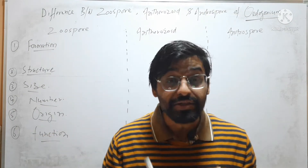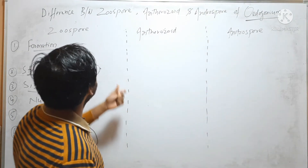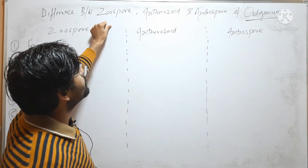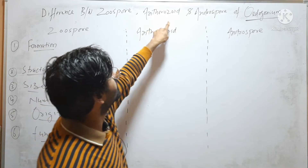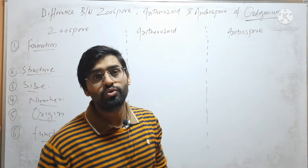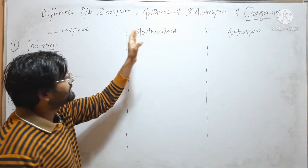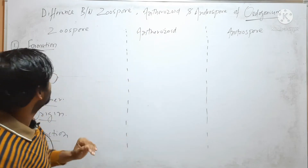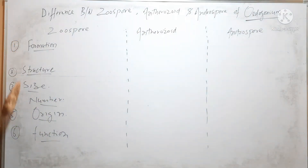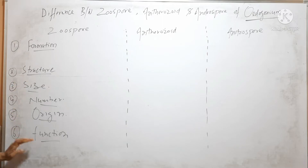Hello friends, in this video we will discuss the difference between Zoospore, Antherozoid, and Androspore of Oedogonium. We will differentiate these three on the basis of six parameters.